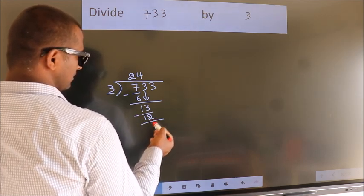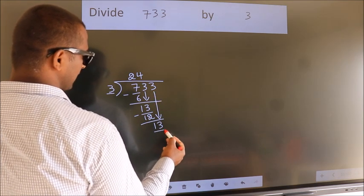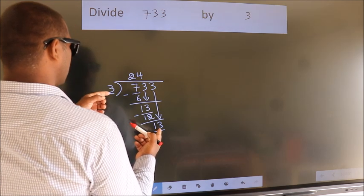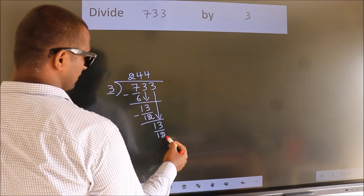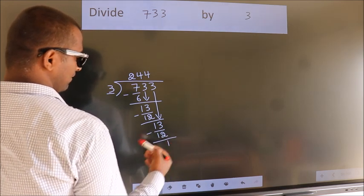After this bring down the beside number. So 3 down. So 13. A number close to 13 in the 3 table is 3 times 4 is 12. Now we subtract. We get 1.